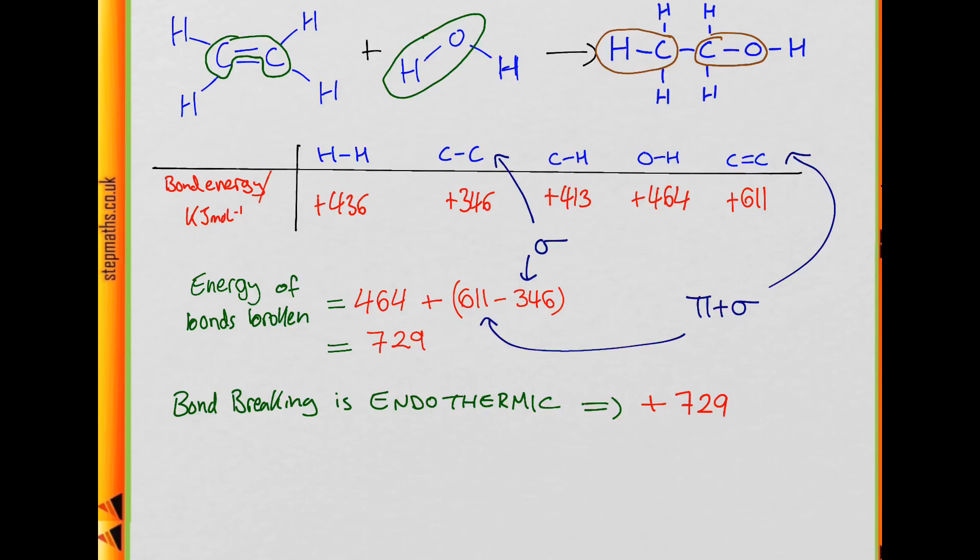Now looking at the energy of bond forming. So we have 413 which comes from forming a C-H bond plus X which we'll say is the bond energy of the C-O.